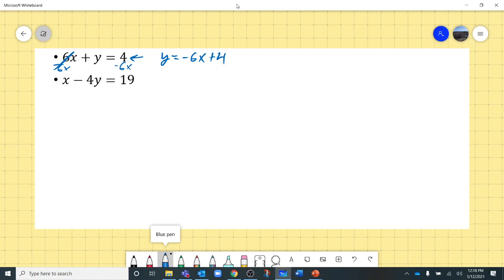My second one I'm going to solve for x. Use a different color. I'm going to add 4y to both sides. And I would get x equals 4y. Those are going to cancel out. 4y plus 19, or 19 plus 4y. Again, it doesn't matter.